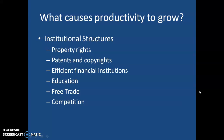What causes productivity to grow? There are institutional structures built within a society that have a direct impact on how productive it is. Property rights: if you have strong property rights protected by your government, that's very positive for productivity because people have a reason to be productive if the fruits of their labor will be protected. The same goes with patents and copyrights — you'll have much more innovation if people can patent or copyright their intellectual property.